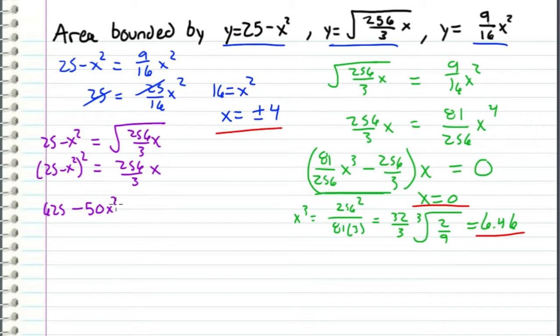Let's multiply this out, and we get 625, which is 25 squared, minus 50x squared plus x to the fourth equals 256 over 3x. So this equation, with its fourth degree, makes it a little difficult to solve, but we're going to take advantage of a little bit of logic in order to solve this equation.